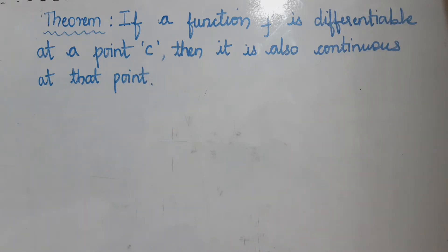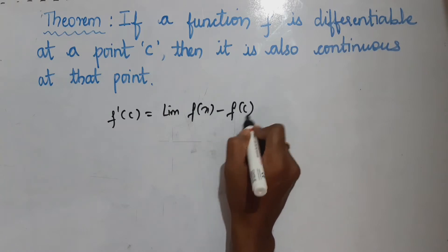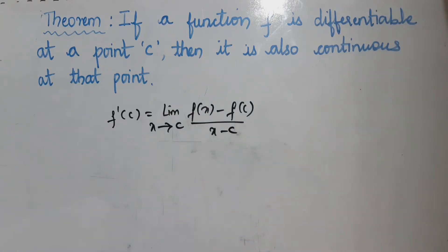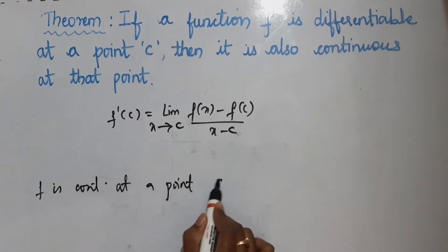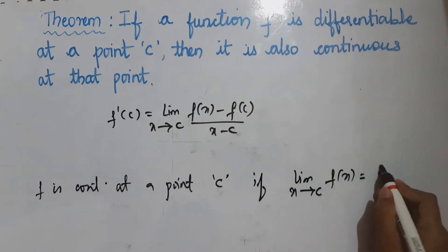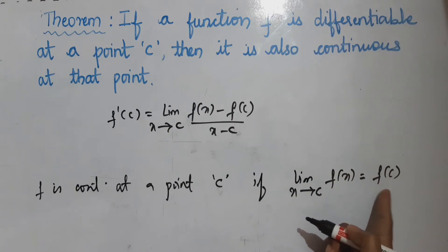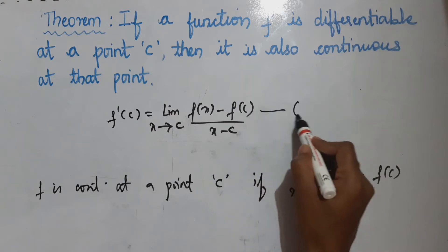In the previous session, I gave you the definition of the derivative of a function. If the function f is differentiable, then f'(c) is equal to the limit of [f(x) − f(c)] divided by [x − c] as x tends to c. This is the definition of the derivative. Also, a function f is continuous at a point c if the limit of f(x) as x tends to c is the same as f(c). The function f is continuous at point c if the limit of f(x) as x tends to c equals the value of the function at the given point.